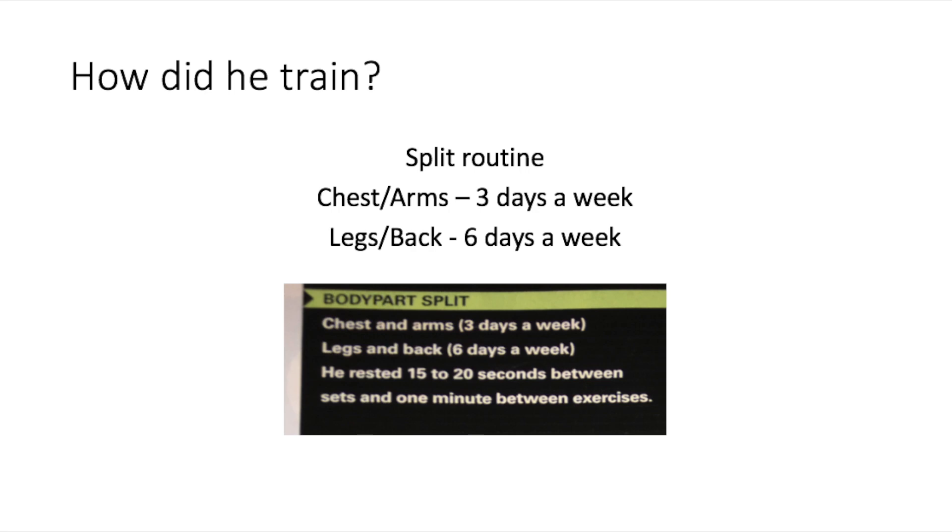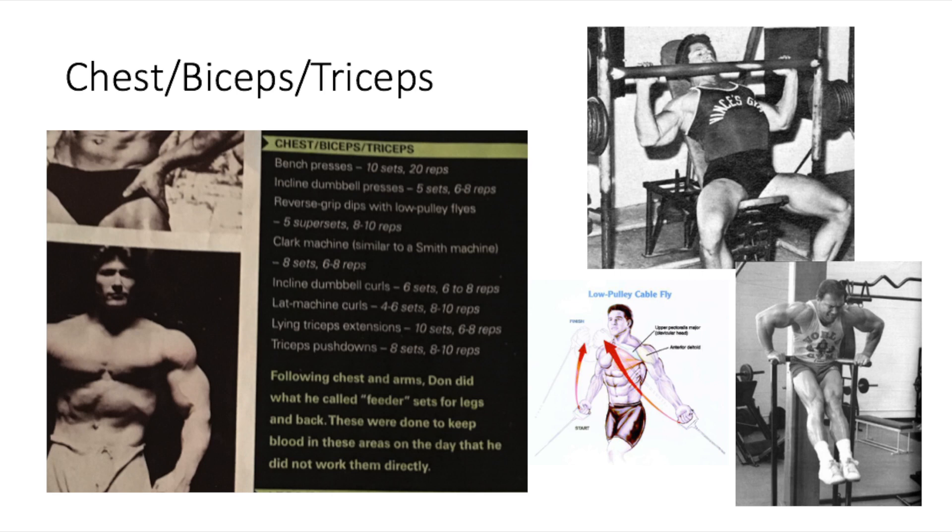With that being said, we're going to move on to the actual exercises and the full routine. Let's start off with the chest, biceps, and triceps workout. He begins his workout with the bench press, does about 10 sets of 20 reps, moves on to the incline dumbbell press, does five sets of six to eight reps.